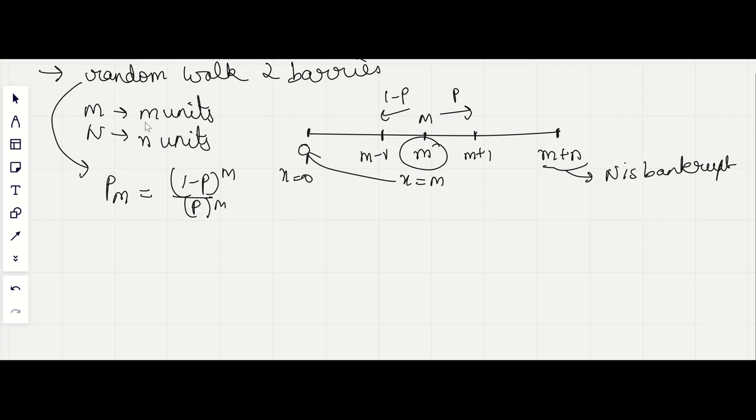In this case, P_m could be divided into two parts. First part: the person goes from m to 0 without going to m plus n. And second: the person goes from m to 0 by first going from m to m plus n and then from m plus n to 0.